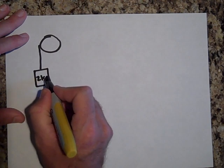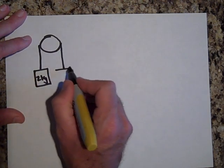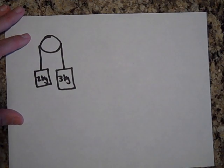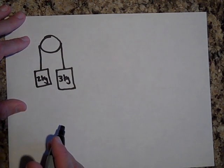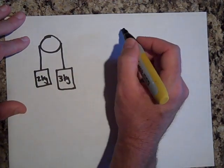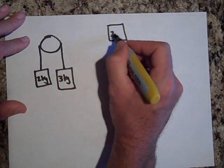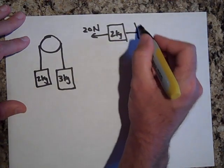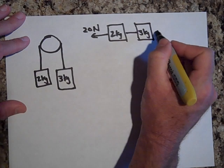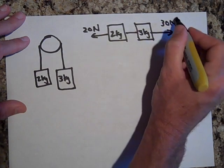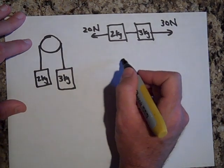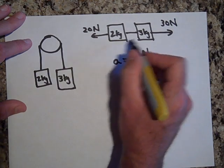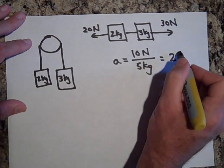Two kilograms. Three kilograms. What will be the acceleration of this system? Well, that's kind of like a two kilogram and a three kilogram being pulled with 20 newtons and 30 newtons. And so the acceleration is equal to the net force, that would be 10 newtons since they're pulling in opposite directions, divided by the mass, which is five kilograms. So that's two meters per second squared.